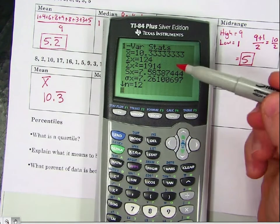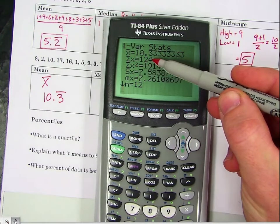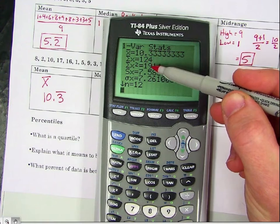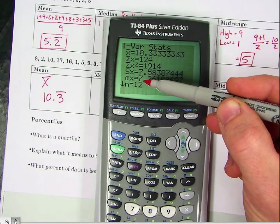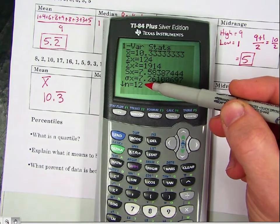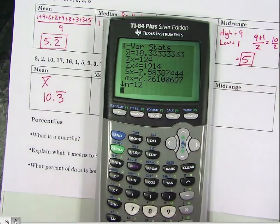Now there's a couple other things it gives you. This is the sum of X. So this is the sum of all the data, 124. Don't worry about these next three. We're going to talk about those next time. N is 12, meaning there are 12 pieces of data. So if you did 124 divided by 12, you would get 10.3.